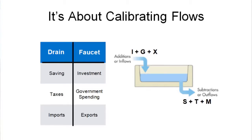Taxes are a leakage. Every dollar that's taxed away from us by government is a dollar we don't have to spend into the economy — it takes water out of the tub. And imports: every dollar we spend buying goods and services that are produced somewhere else in the world is a dollar that can't be captured by some domestic producer trying to sell their output, and so it leaks out of the bathtub.